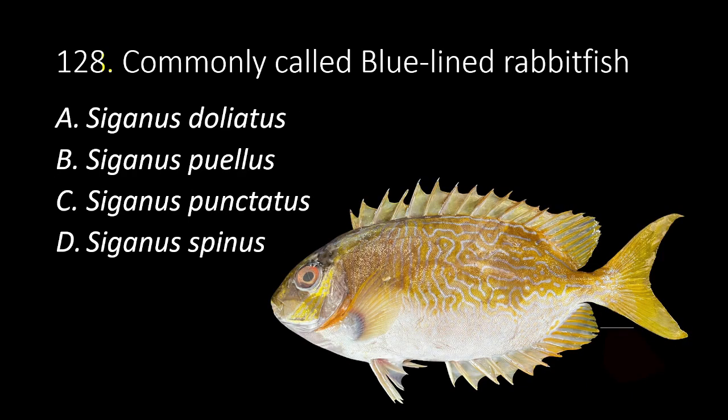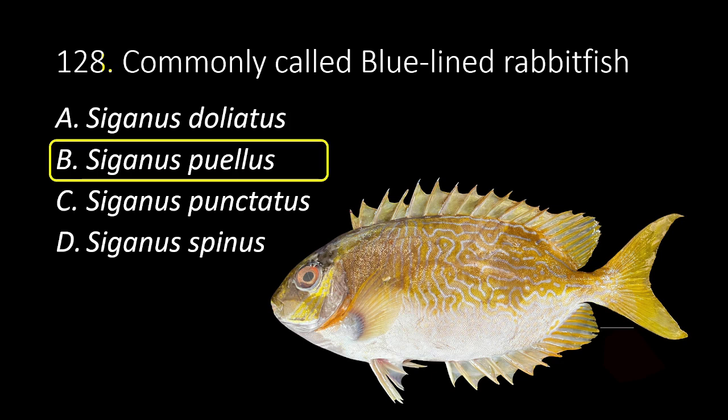128. Commonly called blue-lined rabbit fish. A. Siganus doliatus. B. Siganus puellus. C. Siganus punctatus. D. Siganus spinus. The answer is B, Siganus puellus.